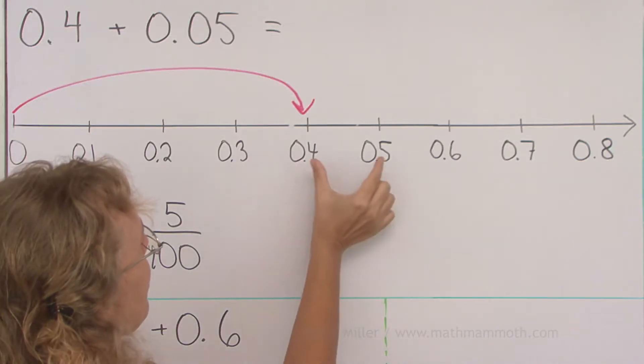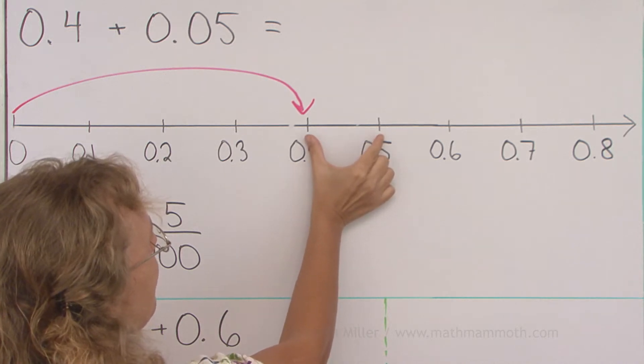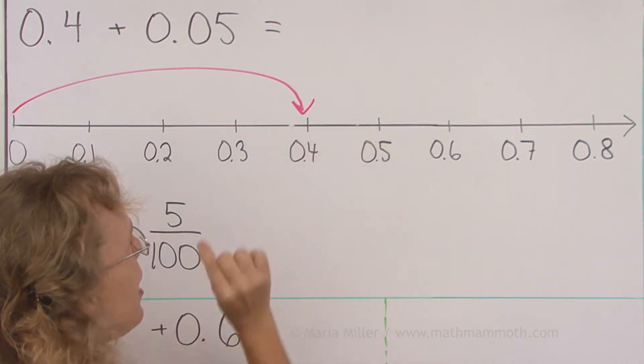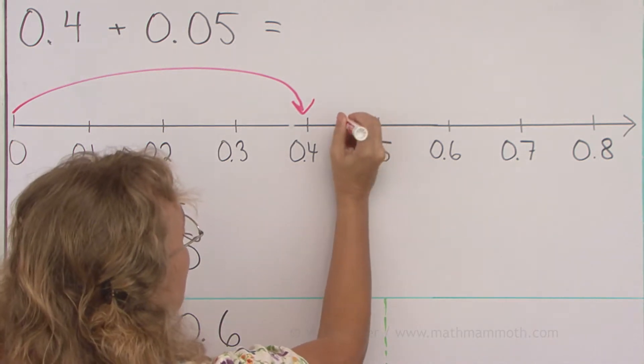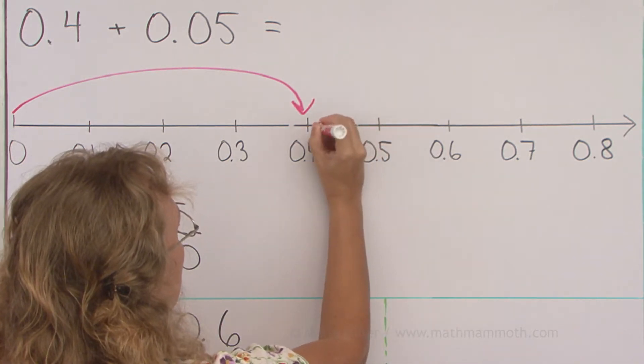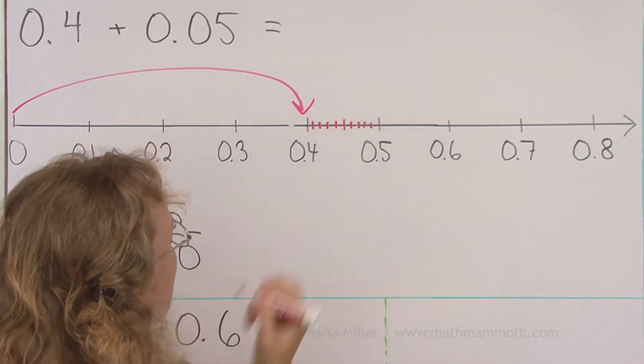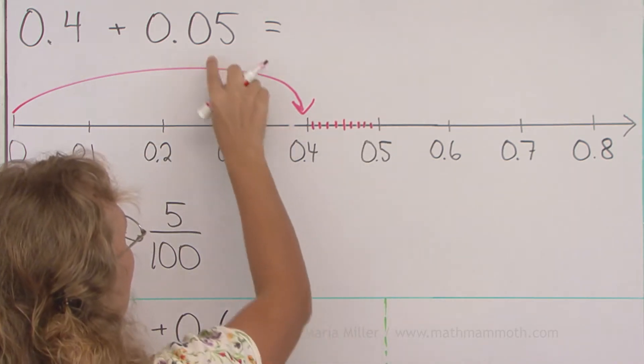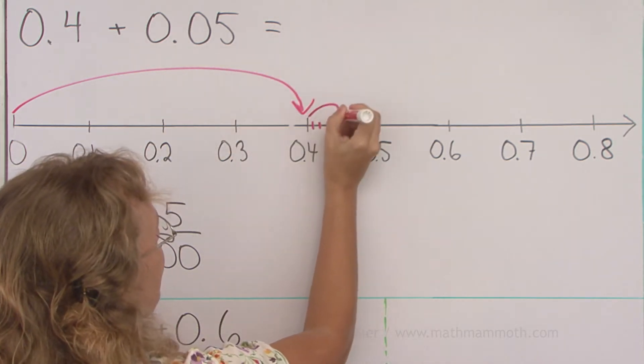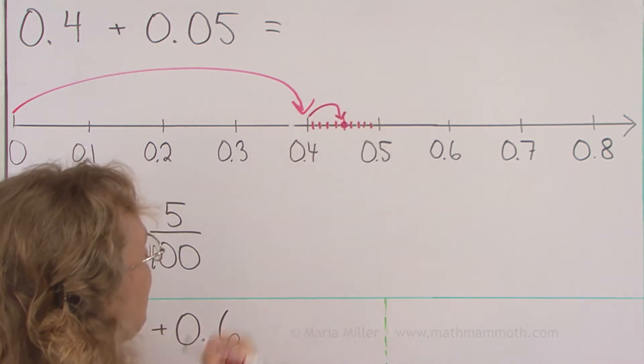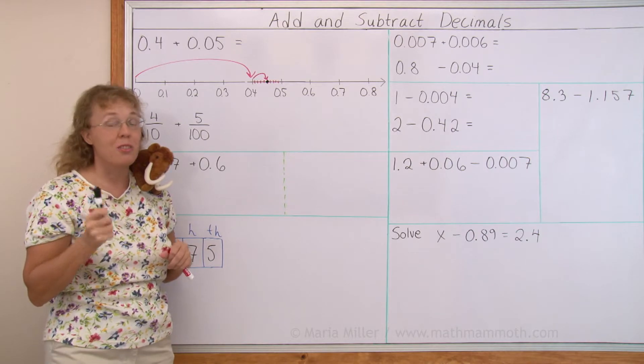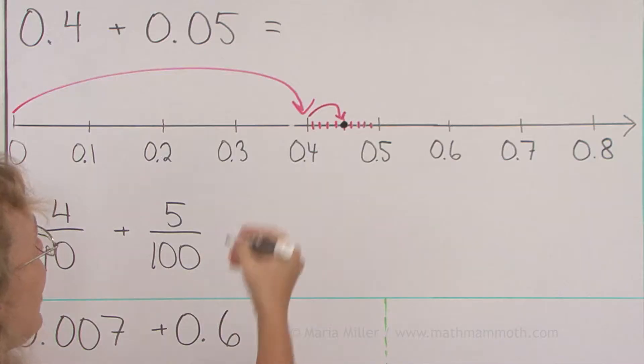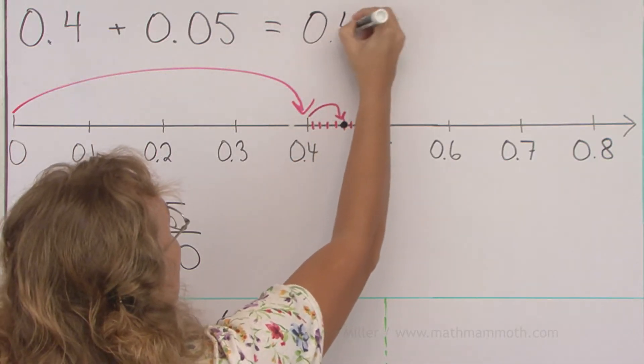Okay, if I take this interval here, which is 1 tenth and divide that into 10 new parts, I get hundredths, remember. So let's do that. And now 5 hundredths more over here. And it is 4 tenths, 5 hundredths or 45 hundredths. The answer is 45 hundredths.